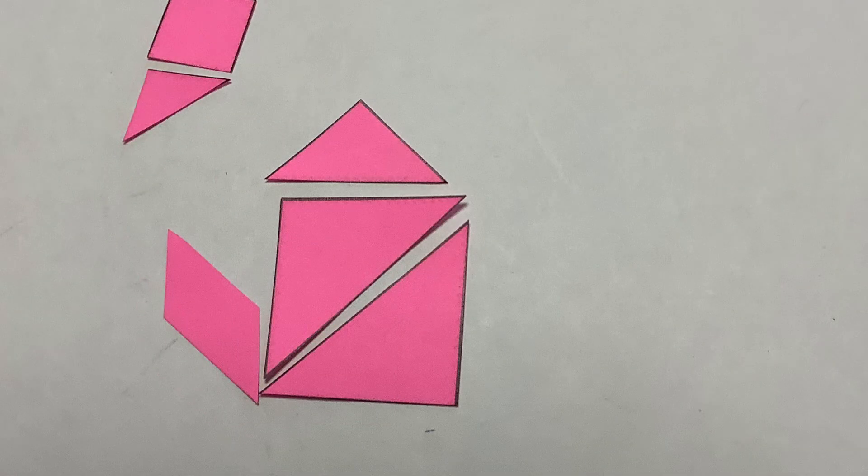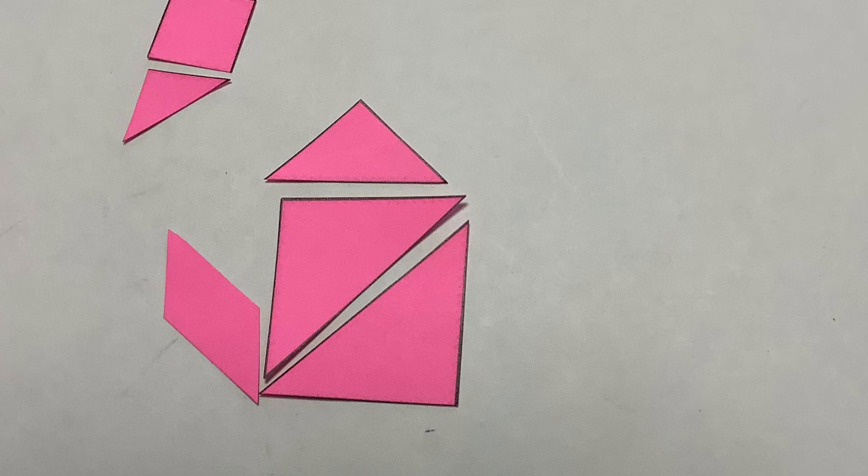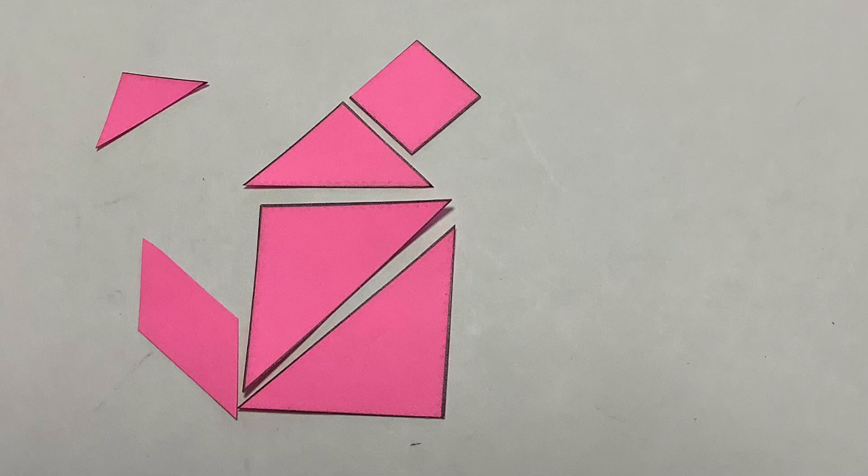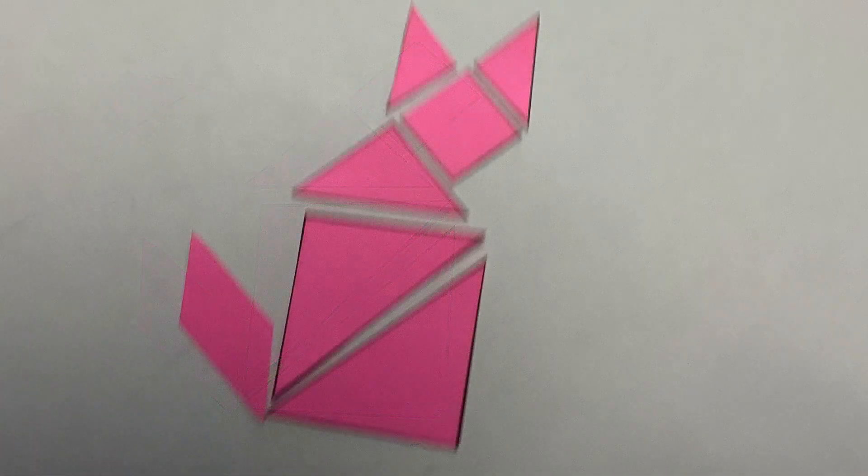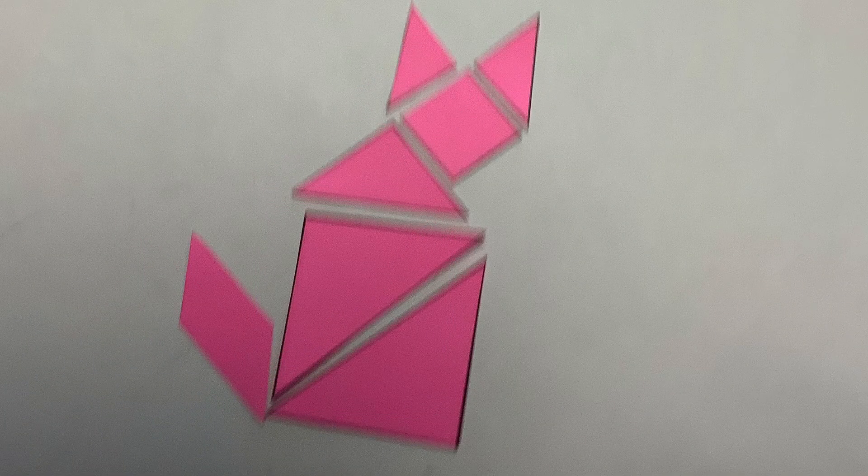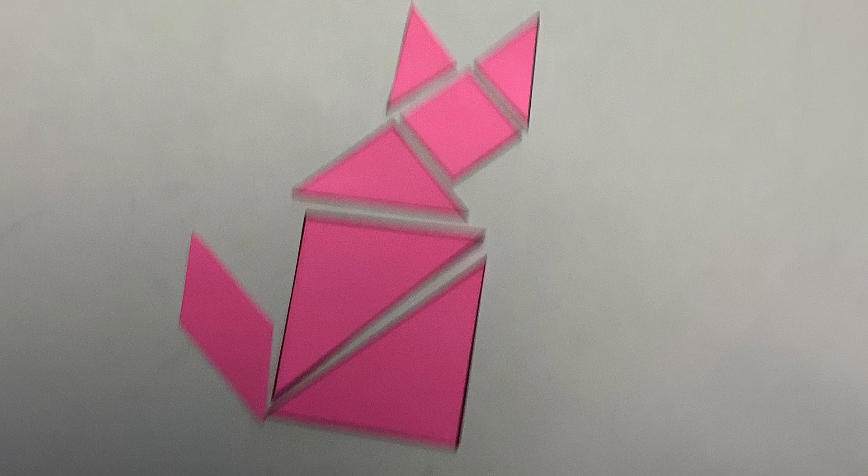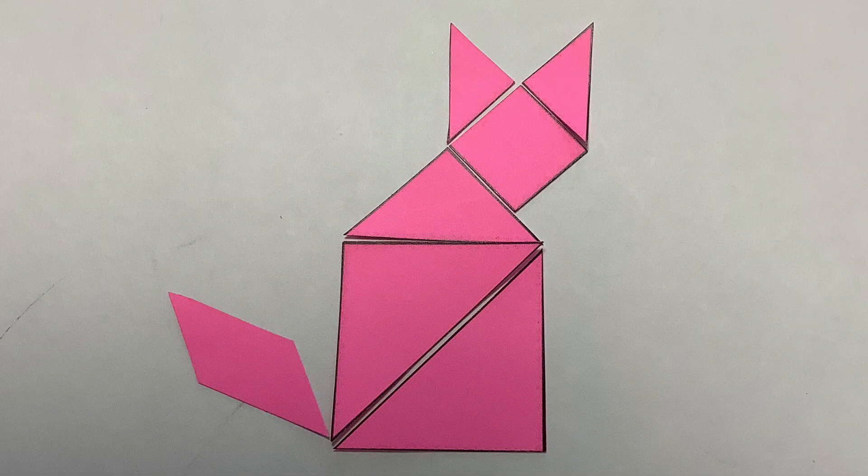The medium triangle is the shoulders, the square is the head, and then the two small triangles are the ears. You slide it all together and it makes the cat shape that matches the puzzle on your worksheet.